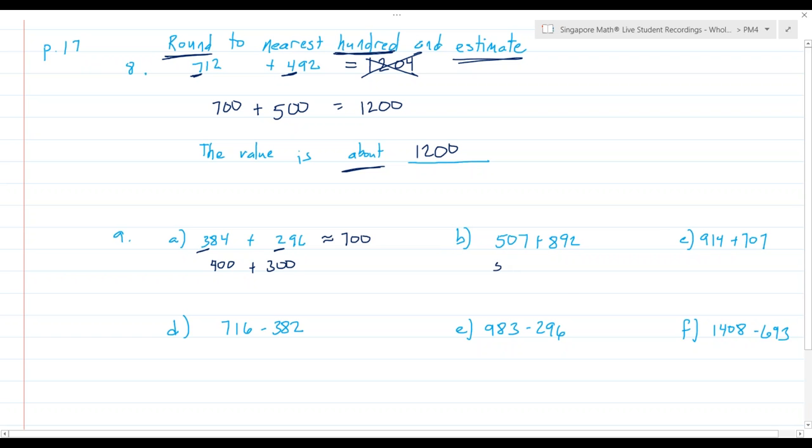507 will round to 500. 892 will round to 900. And when I add them, it is an estimate of 1400. 914 on letter C rounds to 900. 707 rounds to 700. When I combine them, the estimate for the sum of the numbers is 1600.